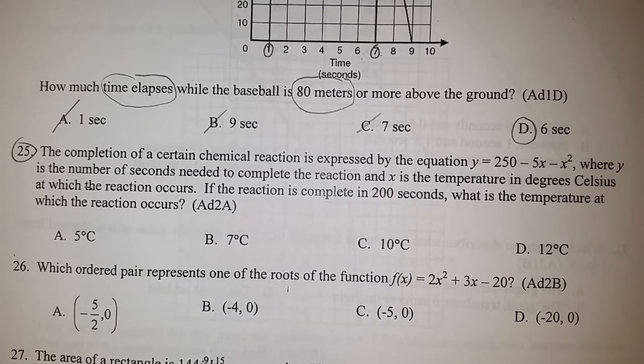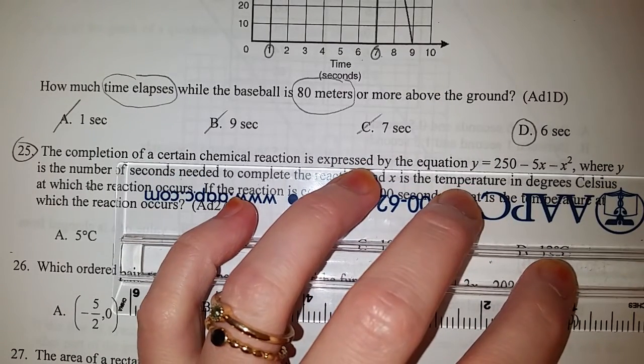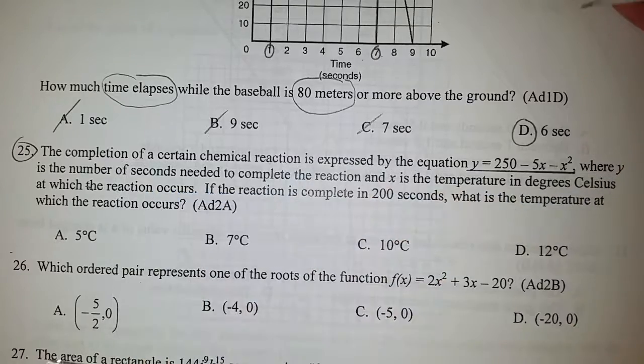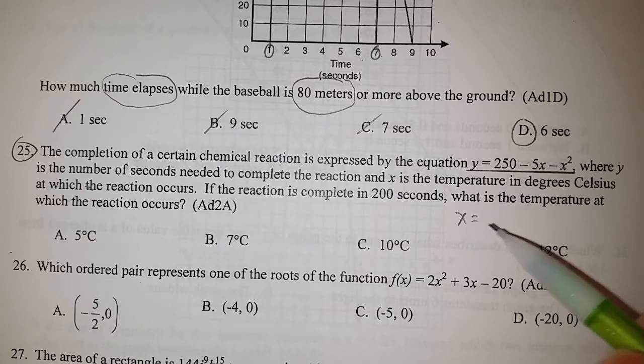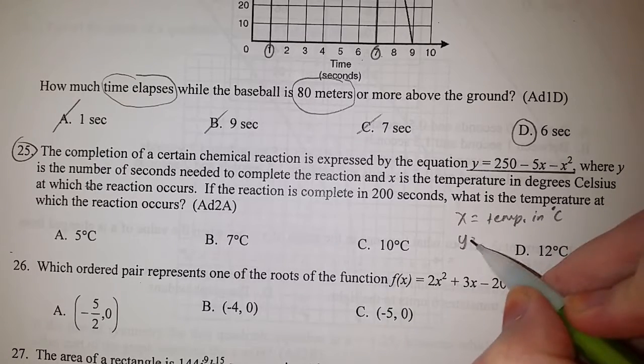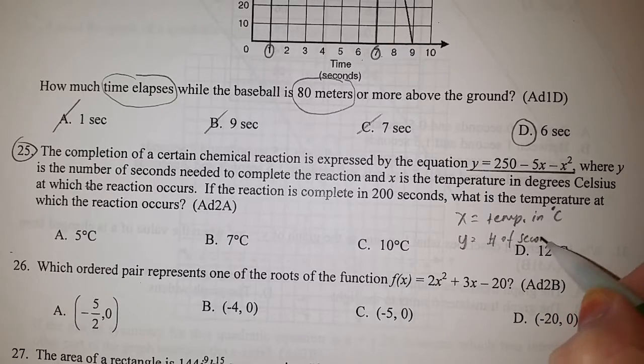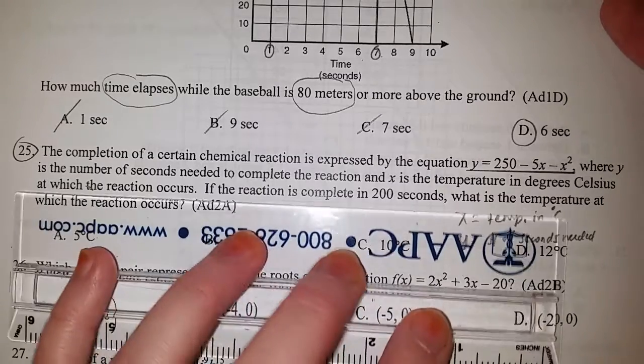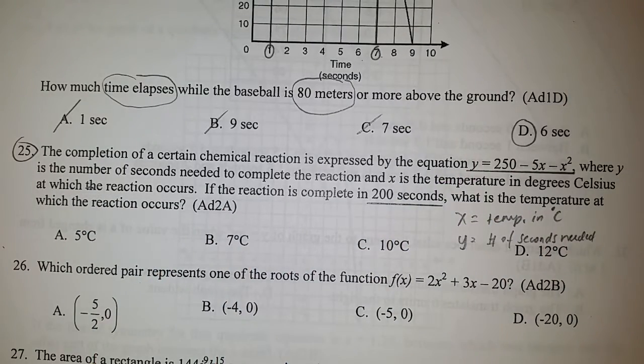This looks difficult but actually it's not. First, you need to know your equation here. Second, x represents the temperature in degrees Celsius, and y represents the number of seconds needed to complete this reaction. It's giving you that the reaction is complete in 200 seconds, so what do you think we need to replace?